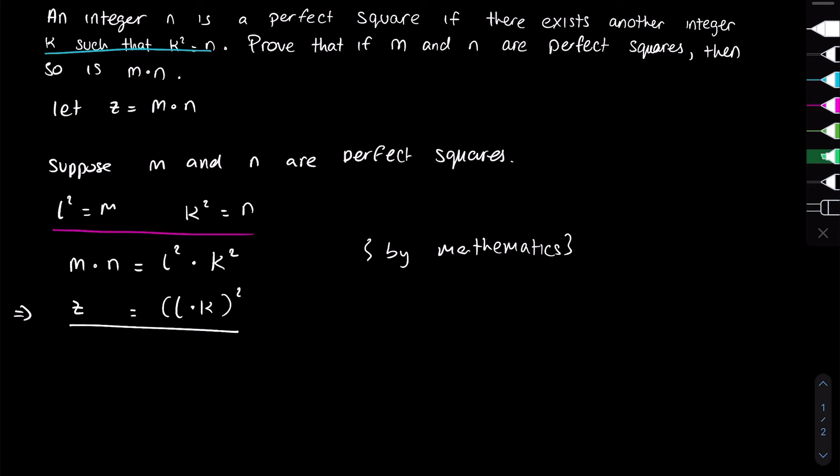How, you might ask? The definition of a perfect square states that if there exists an integer and you square it to get n, z, or m, it's a perfect square. Since k and l are integers, their product is also an integer. Since l times k is an integer and we've squared it to equal z, that means z is also a perfect square.